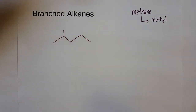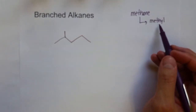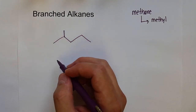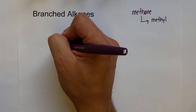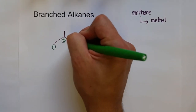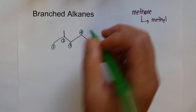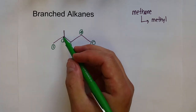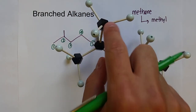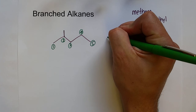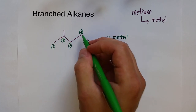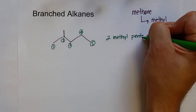We need to name this using the prefix methyl, and we also need to tell you where the methyl group is. So we number the carbons: one, two, three, four, five. Each carbon gets a number, and we use that numbering system to tell you where the methyl group is. The CH3 group is on the second carbon, so this molecule will be named 2-methylpentane.